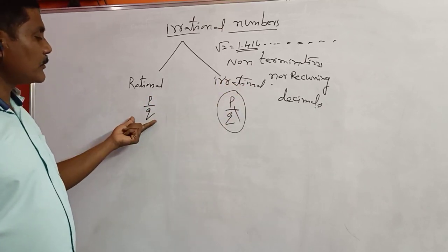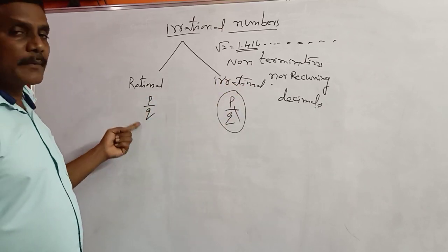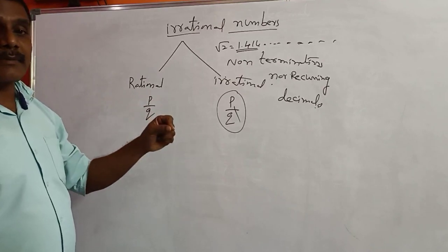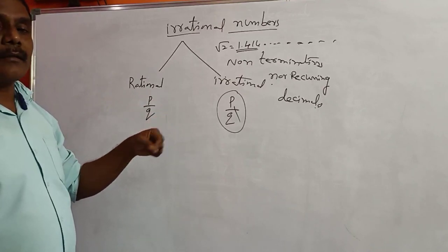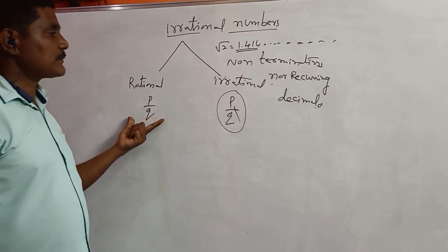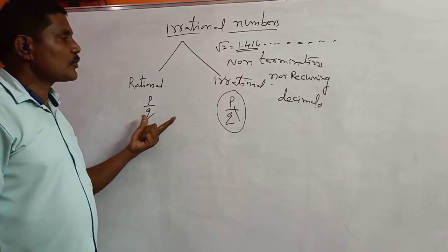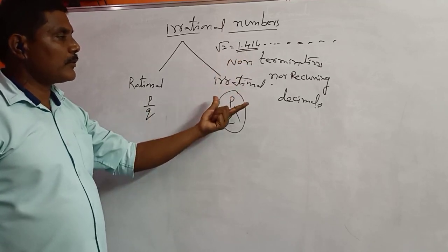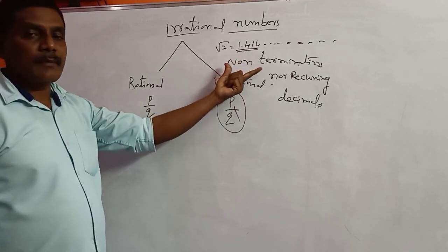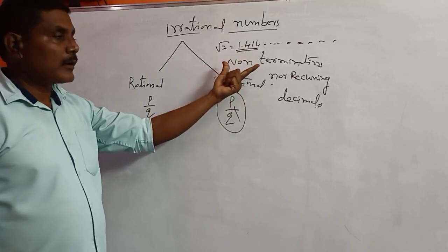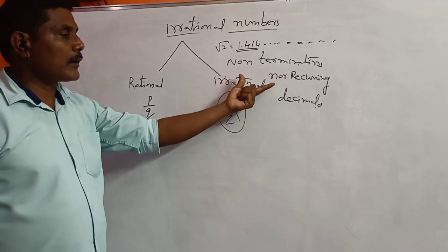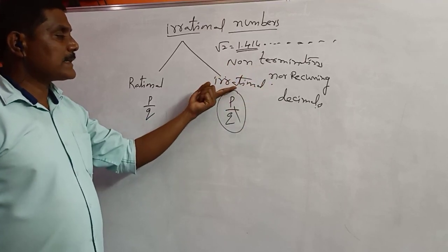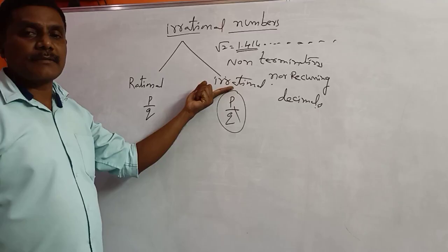If you write p/q, this may be a non-terminating decimal or there may be a terminating decimal. Those numbers which we cannot write in the form of p/q — those numbers are called non-terminating, non-recurring numbers, which we define as irrational numbers.